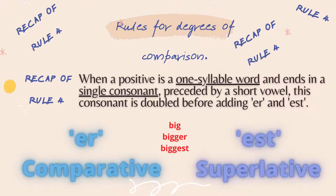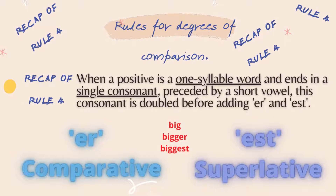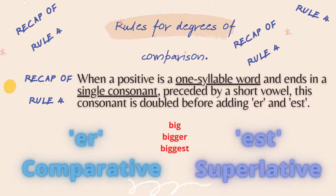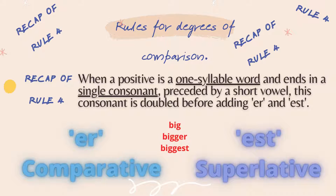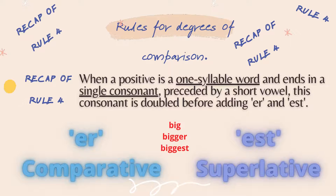Rule number 4: when the positive is a one-syllable word like 'big' (b-i-g), which has a vowel followed by a consonant, you should double the consonant — b-i-g-g-e-r to form the comparative and b-i-g-g-e-s-t to form the superlative.